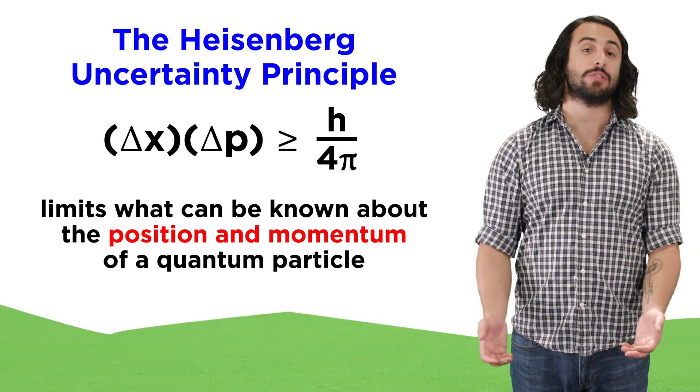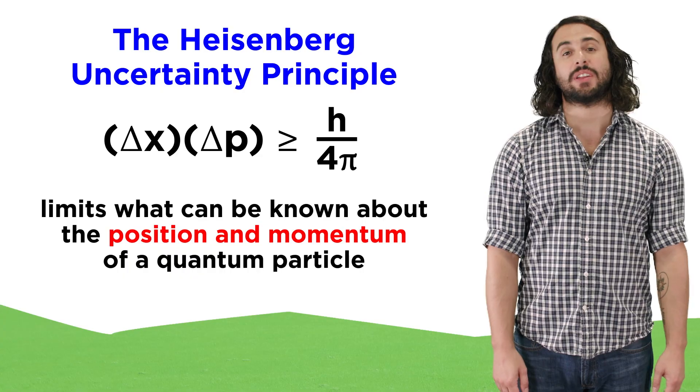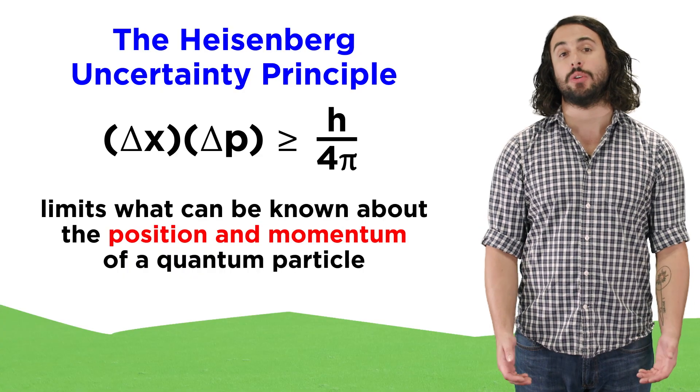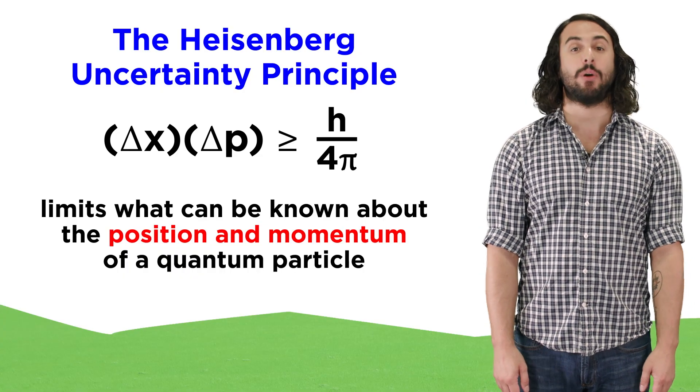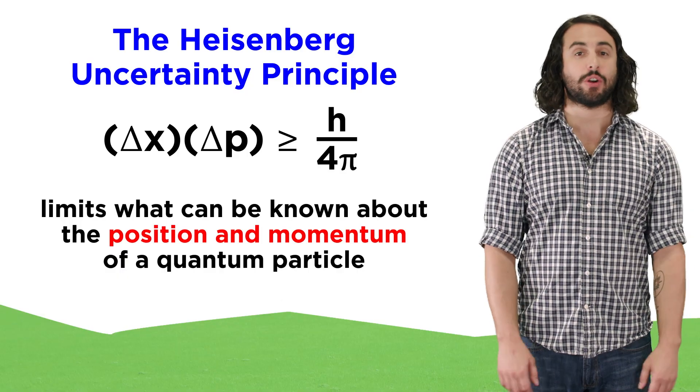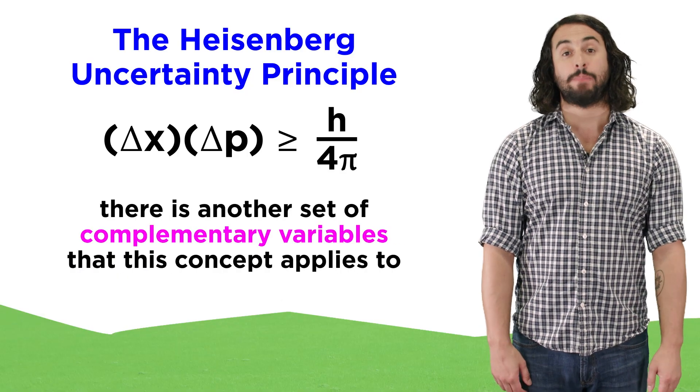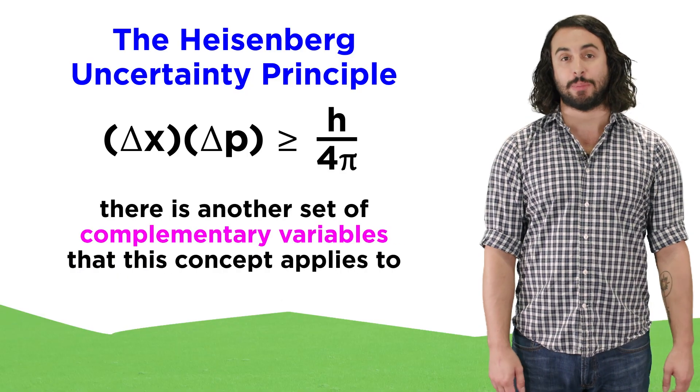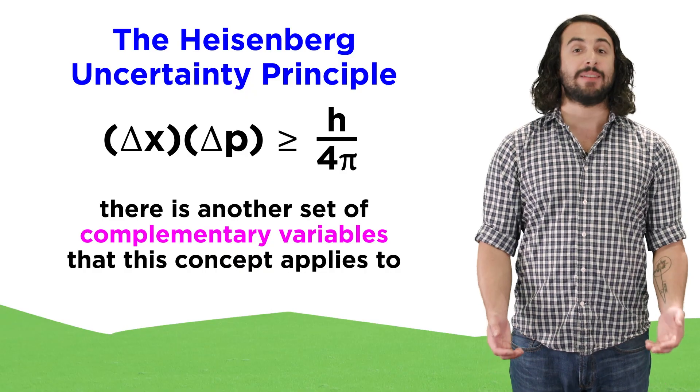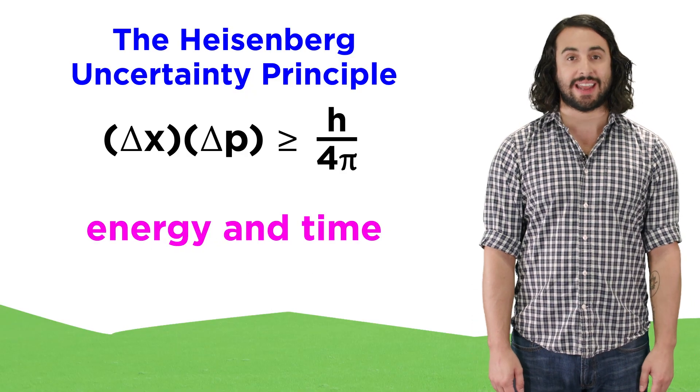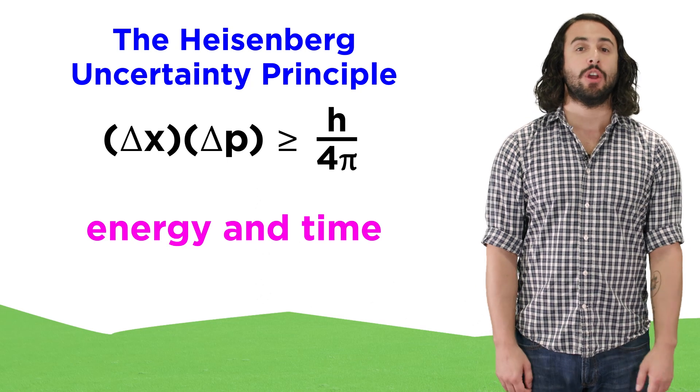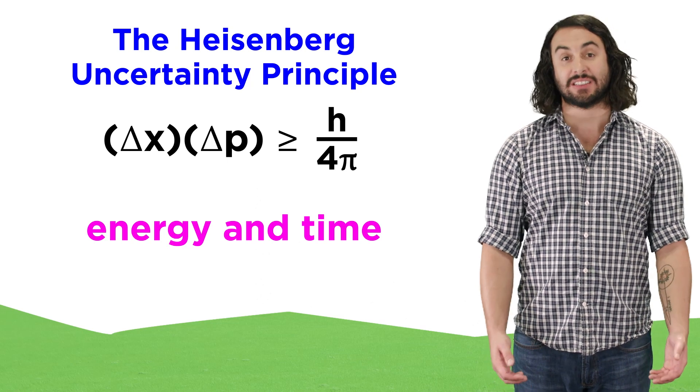We know that the Heisenberg uncertainty principle limits what can be simultaneously known about the position and momentum of a quantum particle like an electron, but there is another set of complementary variables that abide by this principle, so we must also investigate how the uncertainty principle relates to energy and time.